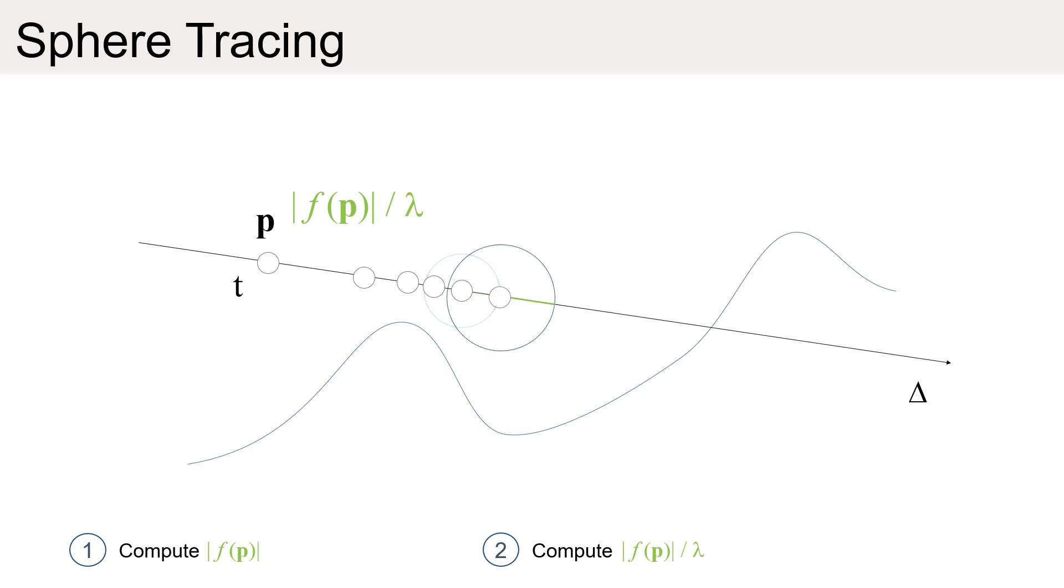This algorithm requires the knowledge of a global Lipschitz bound of the field function, and marches along the ray towards the surface with adaptive increments.